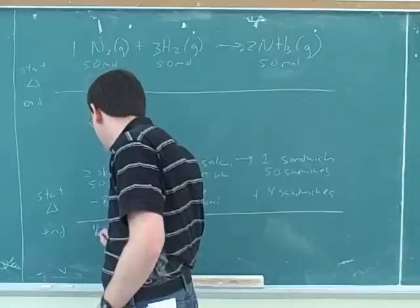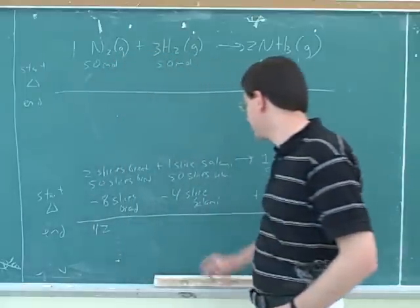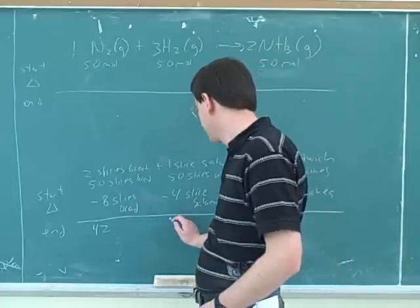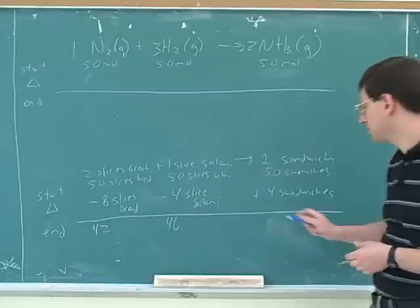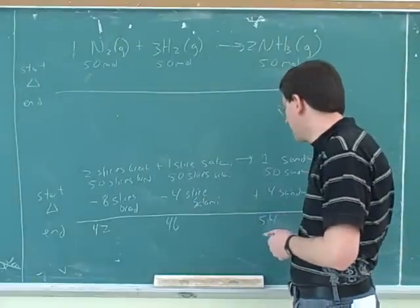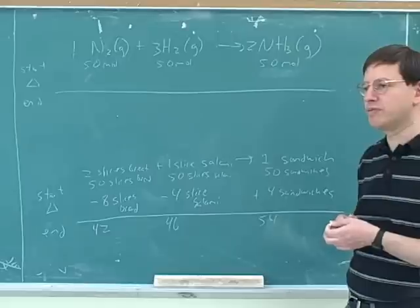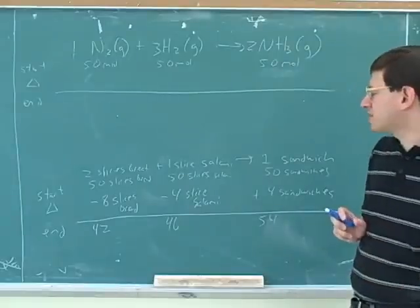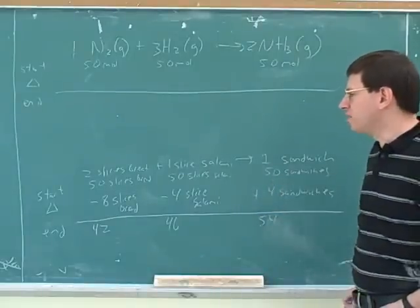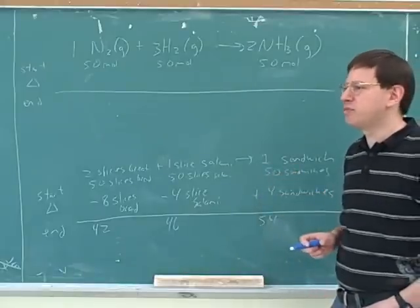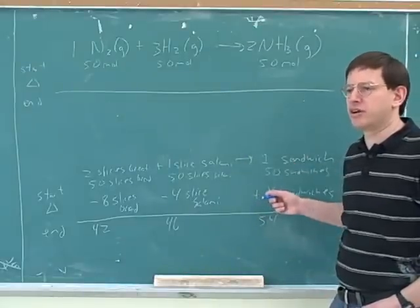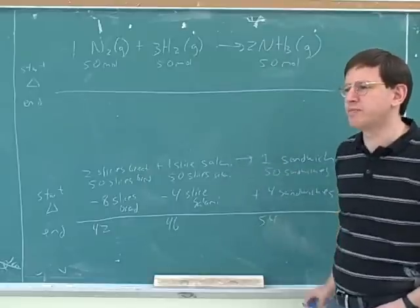So how many slices of bread will we end up with? 42. And how many slices of salami? 46. And how about over here? 54. So now we can see why this is called the start-change-end table. It's a really good habit during the test to actually write this out. It's tempting during the test because there's so much time pressure to try to do things in your head. But it's a really good idea to actually write down these start-change-end tables. It helps you avoid a lot of mistakes.